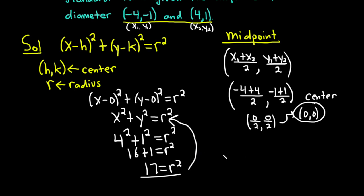So all we do now is take this r² and plug it back into the equation we found. The final answer in this problem will be x² + y² = 17. And that would be the equation of our circle.